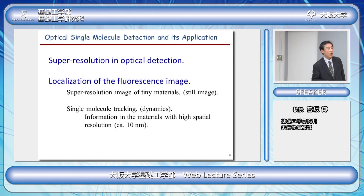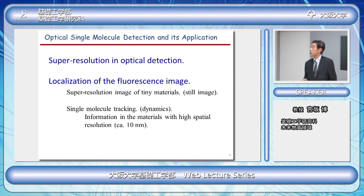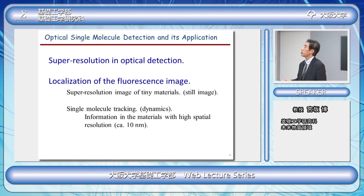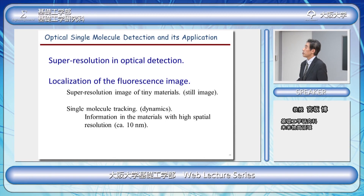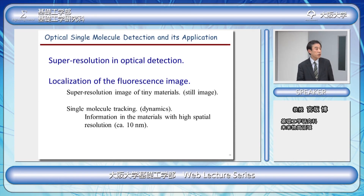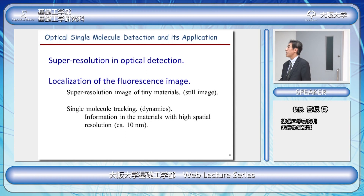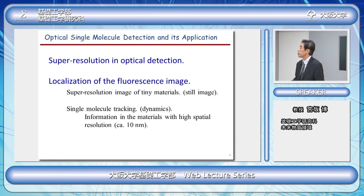This slide shows a short summary of my lecture today on optical single molecule detection and its application. First, I showed you super-resolution in optical detection, then I described localization of the fluorescence image. Super-resolution images of tiny materials provide very important information which cannot be obtained by conventional methods. I also introduced single molecule tracking for the elucidation of dynamics. From these investigations, we could get information in materials with high spatial resolution, typically in the range of 10 nanometers.